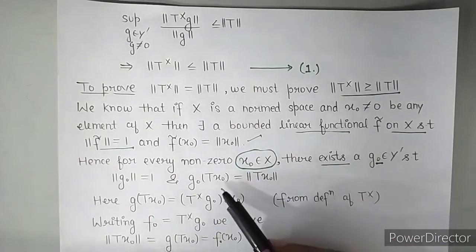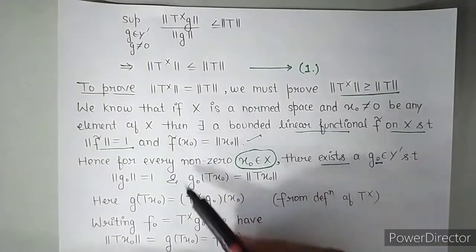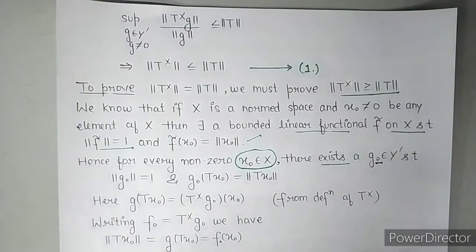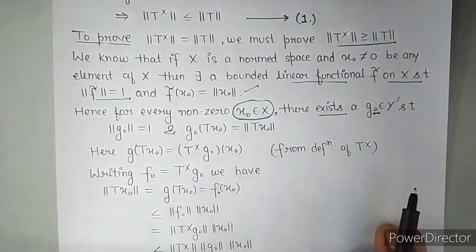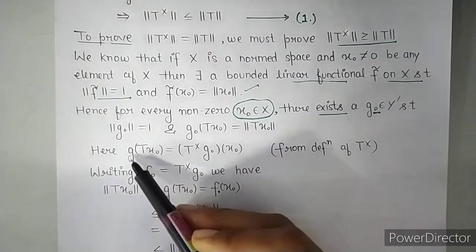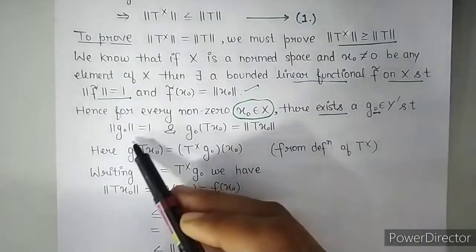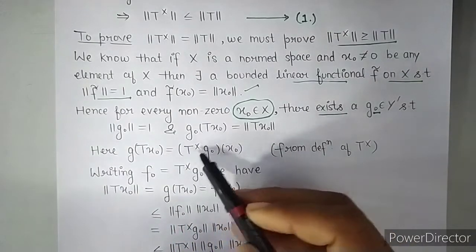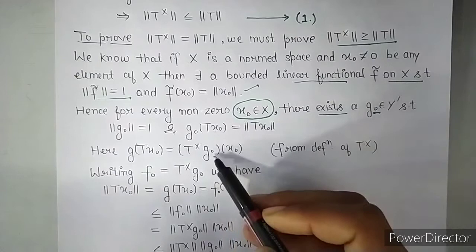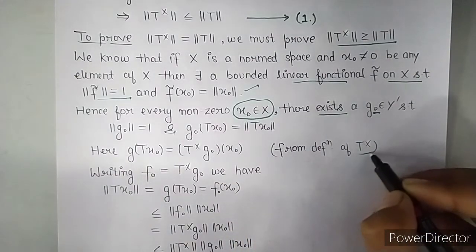OK, there X0 was there, here TX0 is there. Just in place of F tilde we took a new functional, that is G, G0. So here G of TX0 equals, how is it defined, T star of G0 of X0, by the definition of T star. So writing F0 equals T star G0, in place of T star G0 we are writing F0.